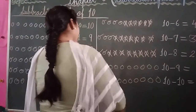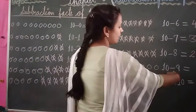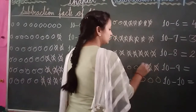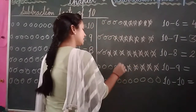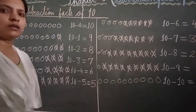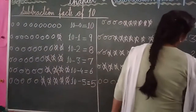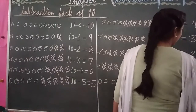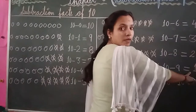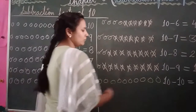Again draw your 10 balls. Write: 10 minus 9. Cross out 9 balls: 1, 2, 3, 4, 5, 6, 7, 8 and 9. Count the balls left: 1. How many balls are left? 1. Write your number: 1. The answer is 1. 10 minus 9 equal to 1.